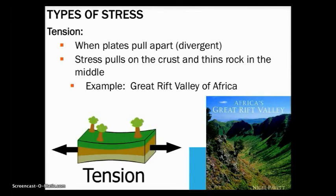Tension occurs at divergent boundaries where plates are being pulled apart. Stress pulls on the crust and causes the middle of the rock to thin, like a rubber band being stretched out. The arrows in the diagram move away from each other, just like divergent boundaries. The Great Rift Valley of Africa was created by tension.